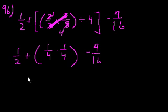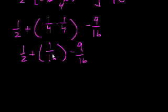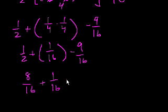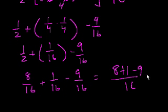That equals 1 and 1/2 plus 1/16 minus 9/16. Converting 1/2 to sixteenths: 8/16 plus 1/16 minus 9/16. That's 8 plus 1 minus 9, all over 16 — which is 9 minus 9, equals 0. Choice E. All that work to get to 0.